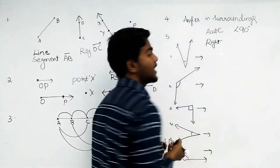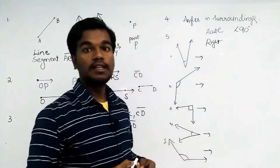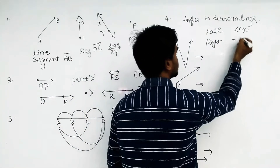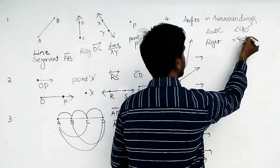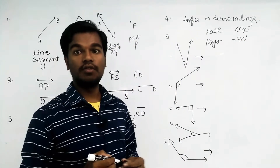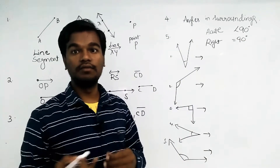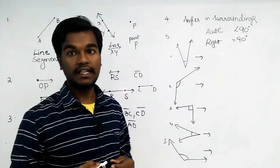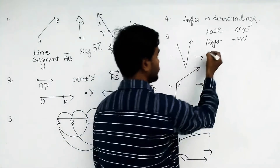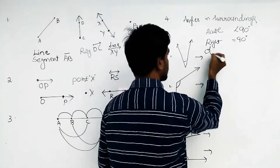A right angle means the angle is equal to 90 degrees. If the angle equals 90 degrees, we call it a right angle.